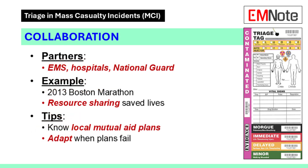Collaboration is key — EMS, nearby hospitals, even the National Guard, tap them. The 2013 Boston Marathon response worked because hospitals shared resources fast. Know your local mutual aid plan. Flexibility matters too: when the plan fails, improvise.